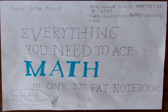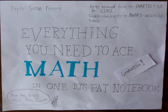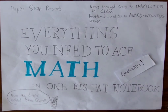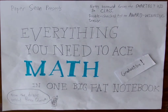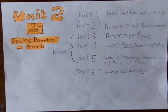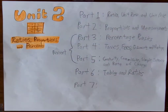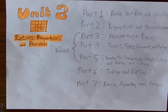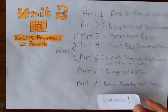Everything you need is H-Map and one big fat notebook from the brains behind BrainQuest. Unit 2: Ratios, Proportions, and Percents. Part 7: Ratios, Proportions, and Percents.